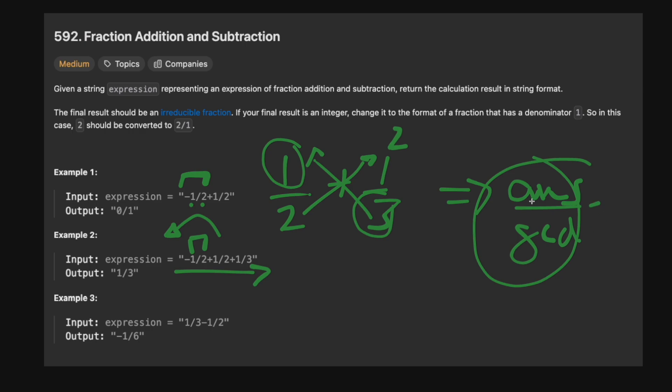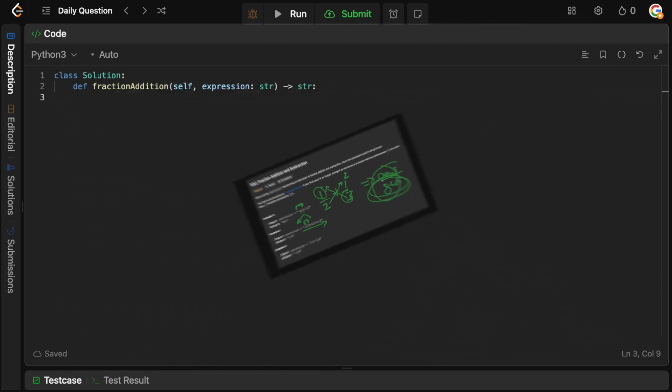The only really tricky part is finding the greatest common divisor at the end. There is a simple formula you can use, or built-in functions in most languages. We'll use the simple formula from math class. Let's go to the code editor and type this up.